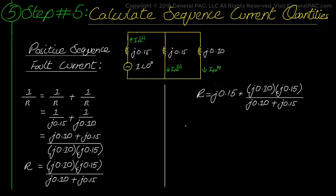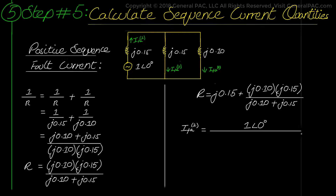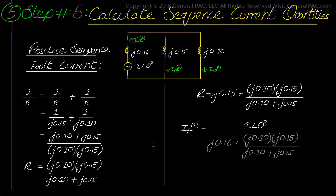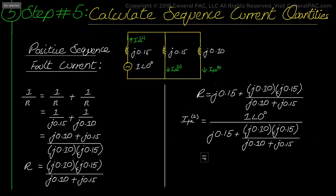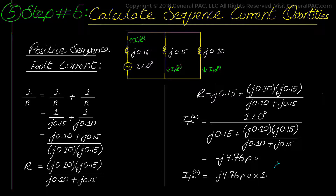Dividing the voltage by the impedance gives the positive sequence current value. The positive sequence current equals 1 at angle 0 degrees (1 per unit) divided by j0.15 plus the negative and zero sequence impedances in parallel. This gives us j4.76 per unit as the positive sequence fault current. Multiplying by the base current of 1255 amps gives us 5,977 amps at an angle of negative 90 degrees.